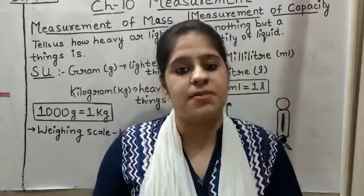The standard units of measurement of capacity are millilitre and litre. Millilitre is used for smaller quantities, like juice cans. Litre is used for petrol, diesel, cooking oil, and milk. Water is measured in both litres and millilitres. So these are the things measured in litres and millilitres.